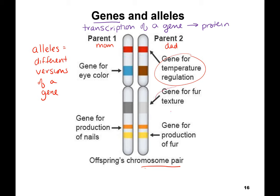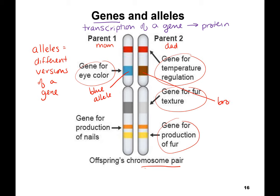You do have genes for eye color. The version — the allele — is say the blue allele for eye color and the brown allele. So the gene is 'eye color,' that's the general characteristic, and the version they got from their mom was blue eyes and from their dad was brown eyes. That's what we're going to talk about in genetics.